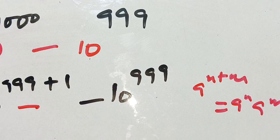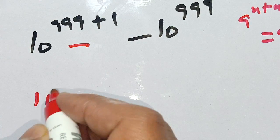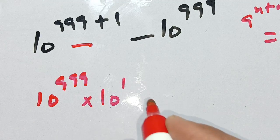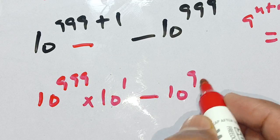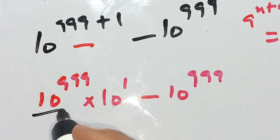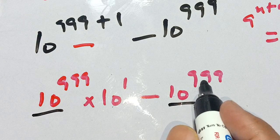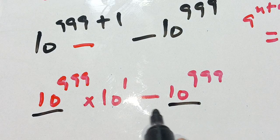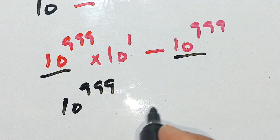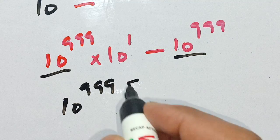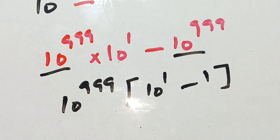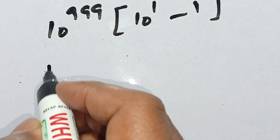We get 10 raised to power 999 times 10 raised to power 1, minus 10 raised to power 999. In both terms, 10 raised to power 999 is common, so we factor it out. This gives us 10 raised to power 999, and the remaining terms are 10 raised to power 1 minus 1.